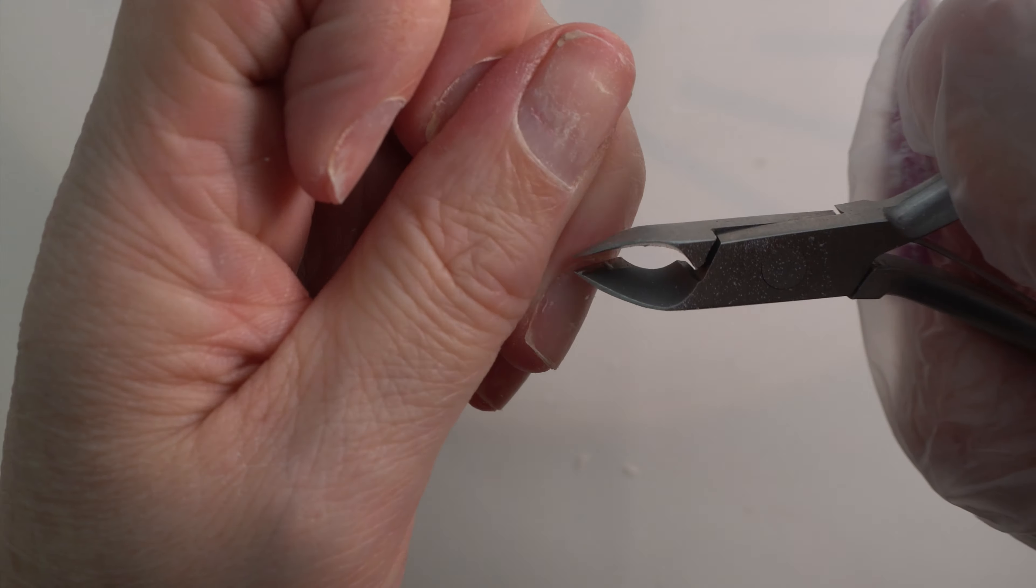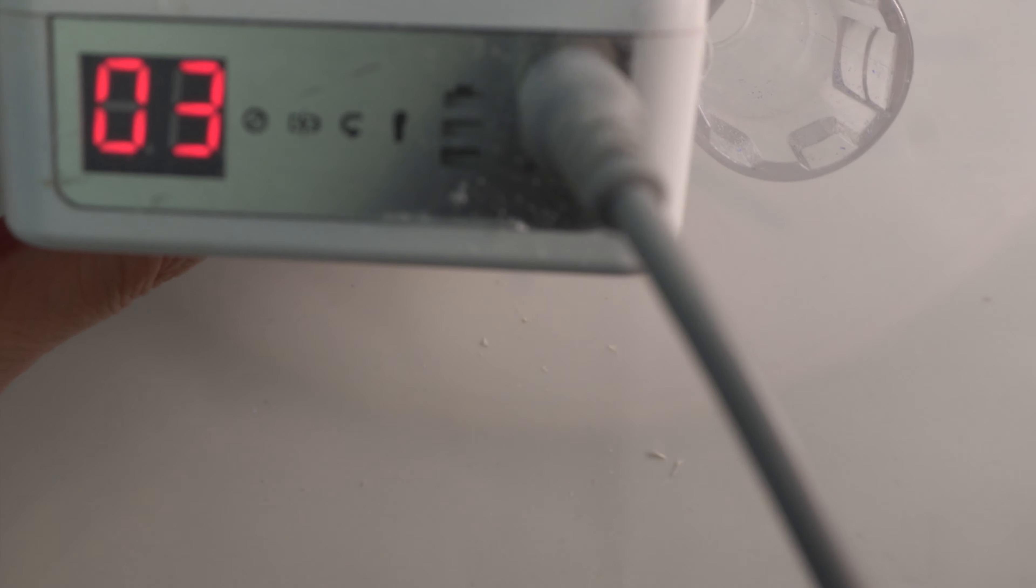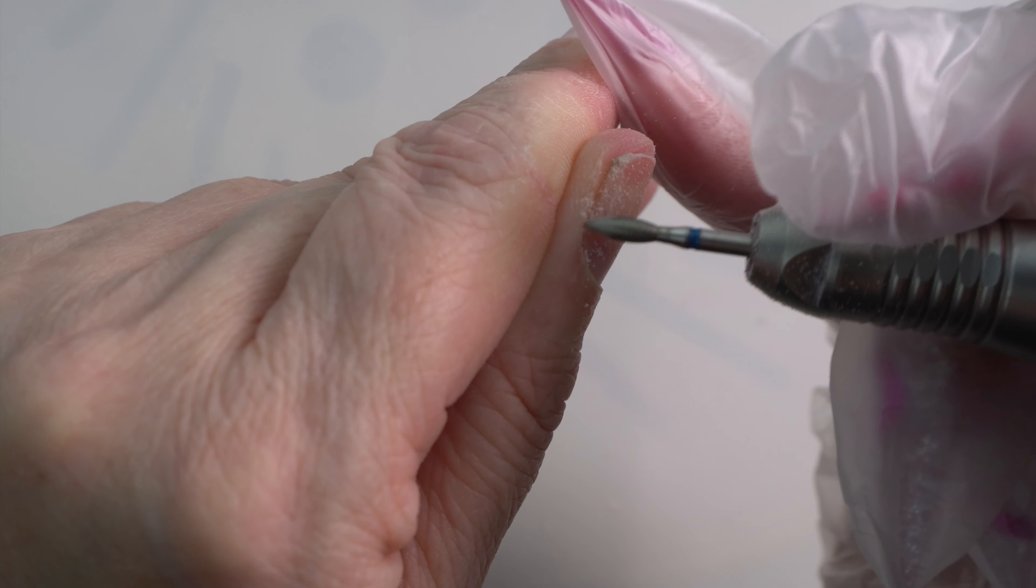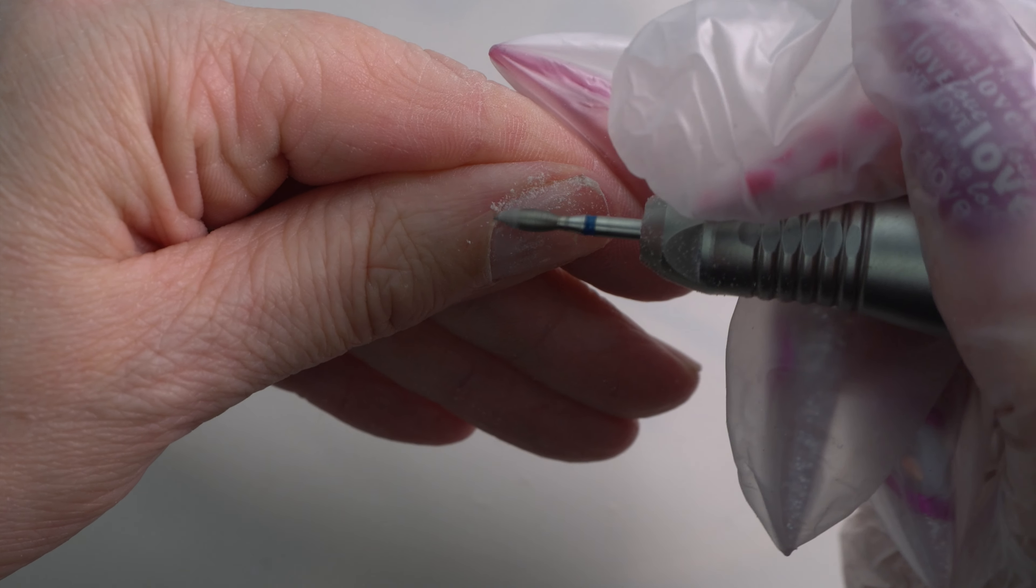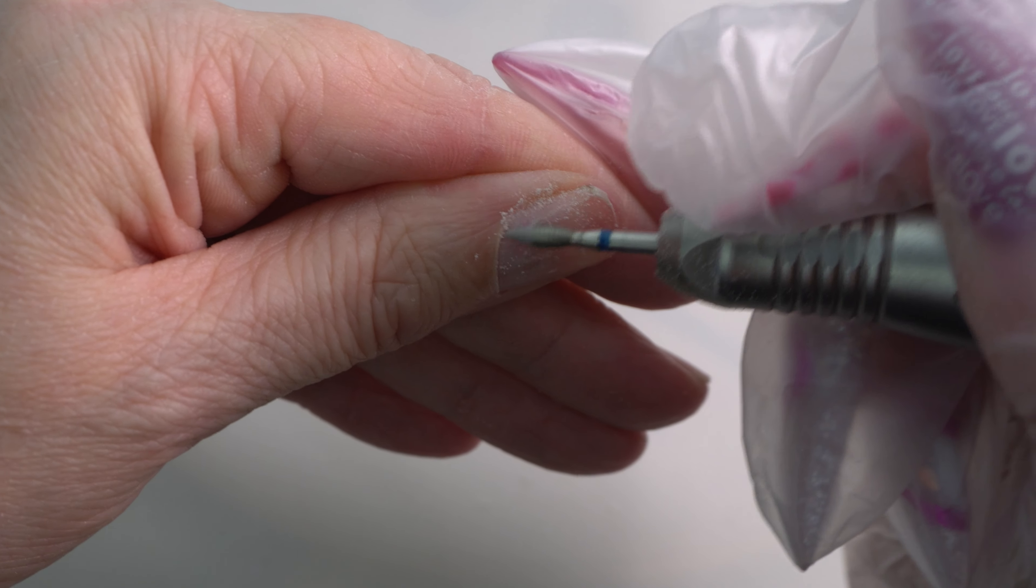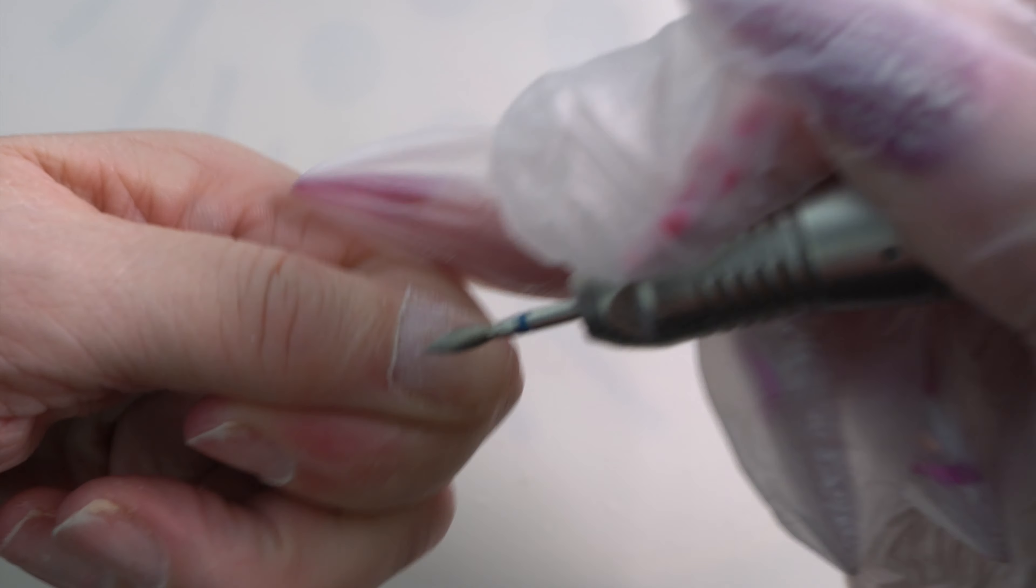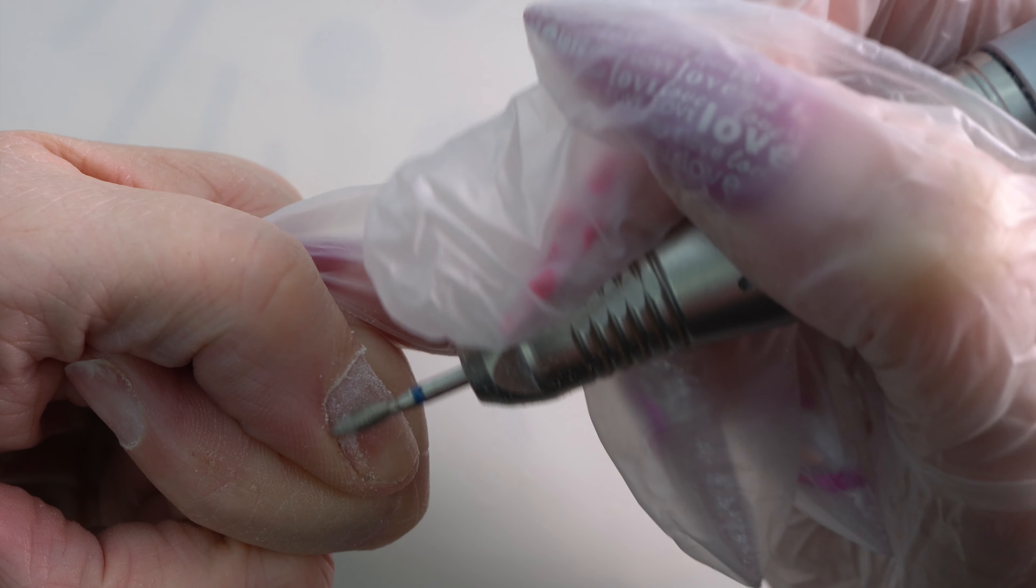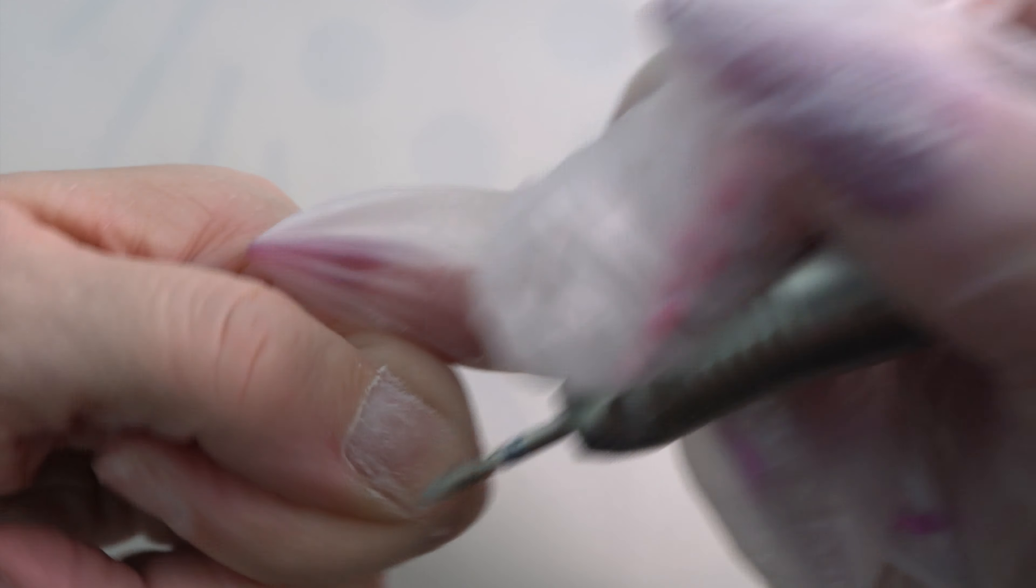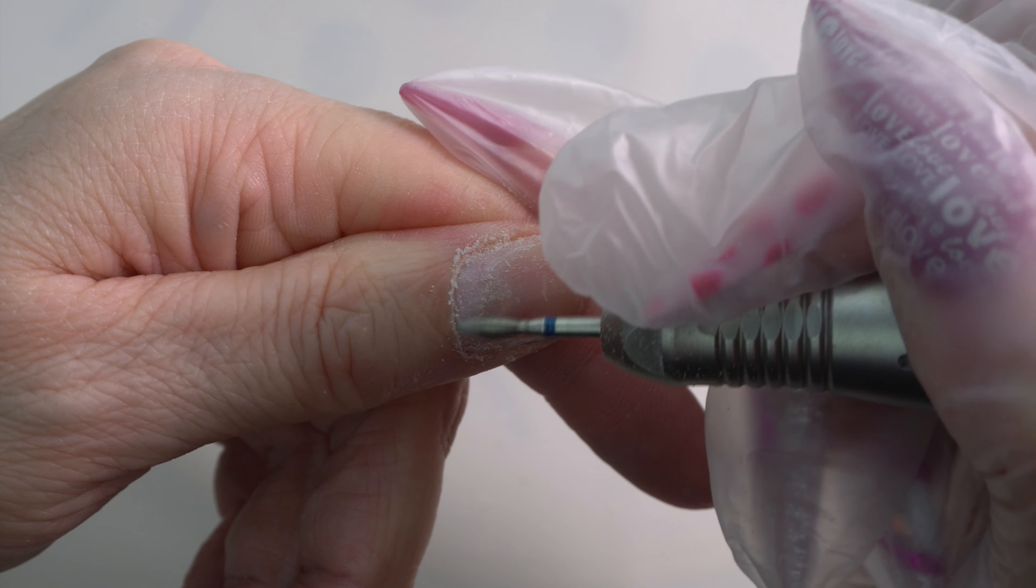We're going to come in with an e-file, and I'm using a diamond bit which is very delicate—it isn't a rough one at all. We're literally going to go over the nail plate to remove any excess dead skin that the cuticle pusher missed. I would not recommend using an e-file unless you've done an e-file course because they can be very dangerous.